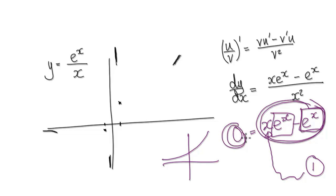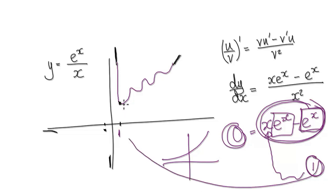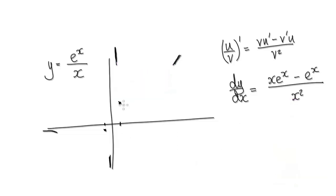The only time it will equal zero is when x equals positive one — that's the only time the right-hand side equals zero, nowhere else. So we know the gradient will be flat right at x equals 1. If the gradient is flat there, then the graph must do something like this, because that is the lowest point. We know the graph would never do the multi-hump shape, because the only time the gradient is zero is when x equals one.